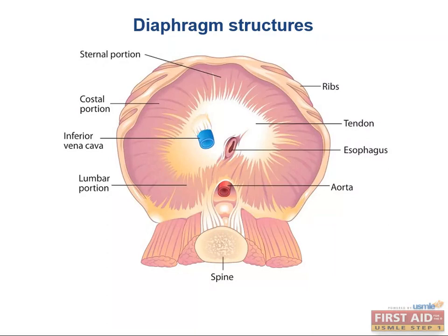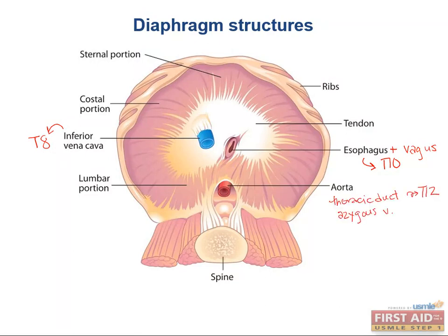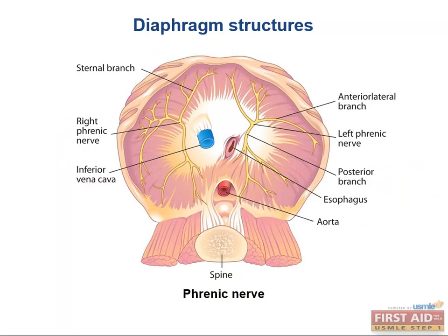From a surgical and radiology standpoint, there are several important structures that perforate the diaphragm at different levels. The IVC passes through at T8. The esophagus and the vagus penetrate at T10. The descending aorta, thoracic duct, and azygous vein enter at T12. Here's how you can remember it: 'I ate 10 eggs at T12.' The diaphragm is the primary muscle of inspiration, innervated by the phrenic nerve, which comes off C3, C4, and C5 — remember, C3, 4, and 5 keeps the diaphragm alive. If the diaphragm is irritated, patients will report pain in the shoulder and the trapezius ridge. This is referred visceral pain.